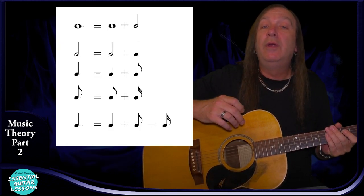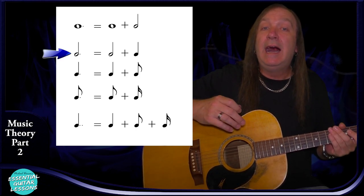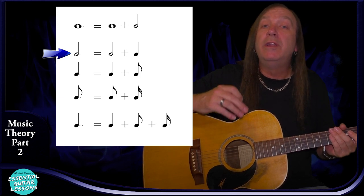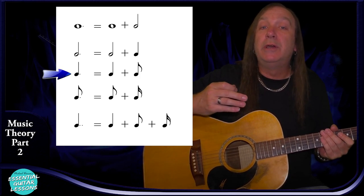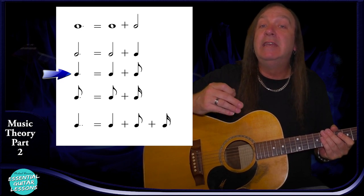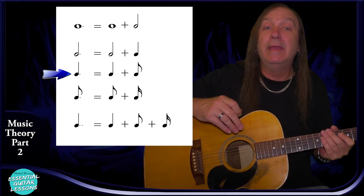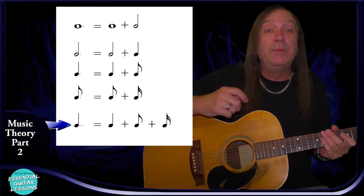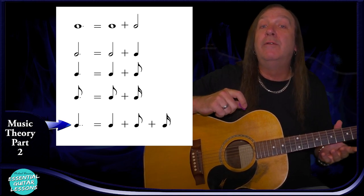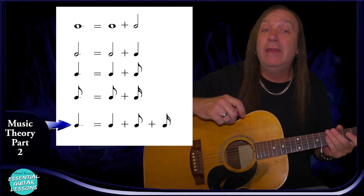We also have dotted notes — we just put a dot after our note, so we can call it a dotted half note, or dotted crotchet, or dotted quarter note. We can do this with any of the notes. With a dotted note we take the value of the original note, halve it and add them together. So a dotted half note equals a half note plus a quarter note. A dotted quarter note equals a quarter plus an eighth. We can also have two or three dots after a note, which is much rarer — we halve the value of each subsequent dot.